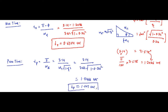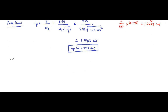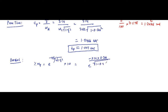Now the percentage overshoot: %OS = e^(−πζ / √(1−ζ²)) × 100 = e^(−3.14 × 0.316 / √(1 − 0.316²)) × 100. Calculating this gives approximately 0.3514 × 100 = 35.14%. So the percentage overshoot is 35.14%.